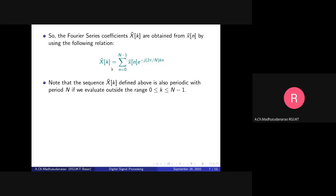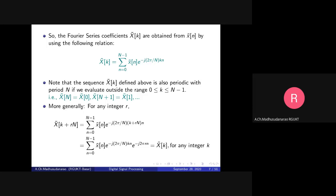You can observe that this sequence of DFS coefficients X̃(k) is also periodic with period N. You can verify by substituting k + N in place of k on both sides and ending up with the same expression. This means X̃(N) = X̃(0), X̃(N+1) = X̃(1), and so on. More generally, X̃(k + rN) = X̃(k) for any integer r.